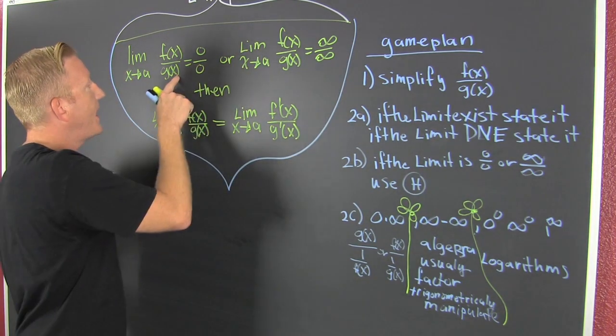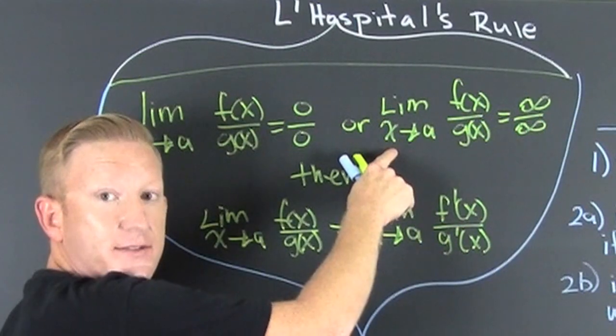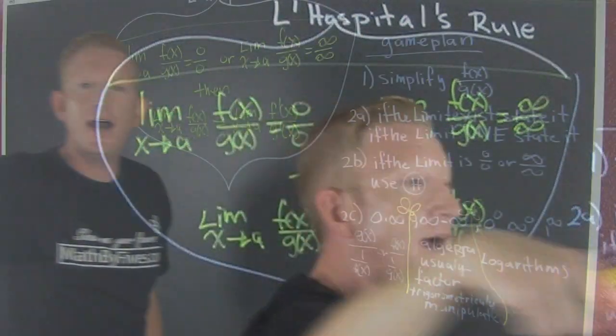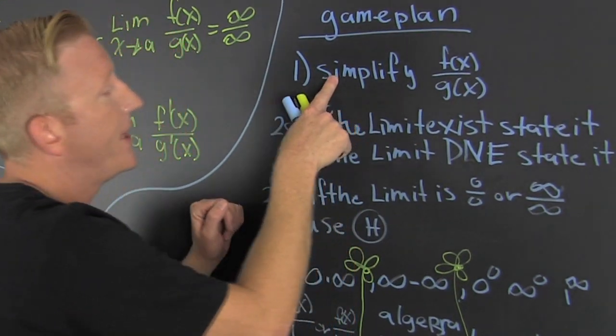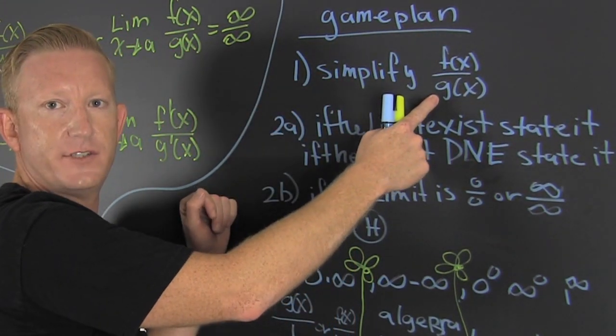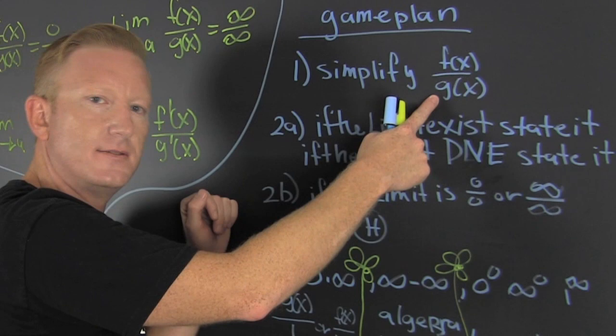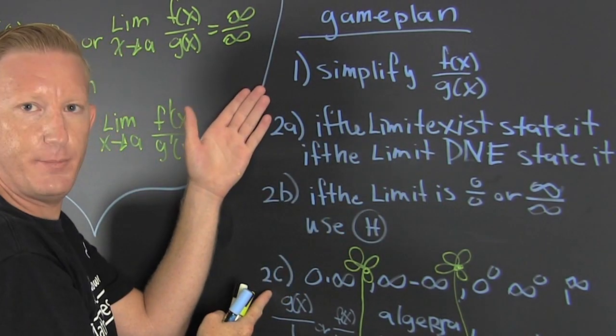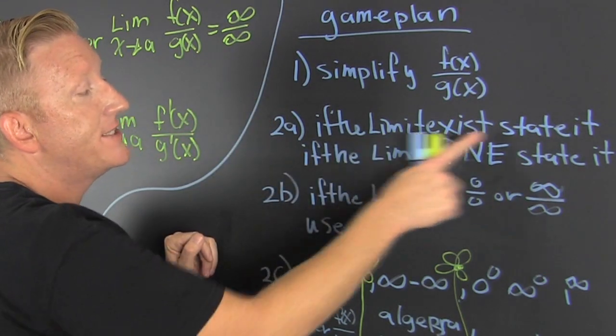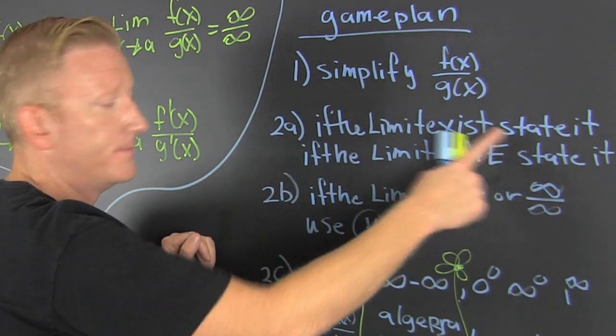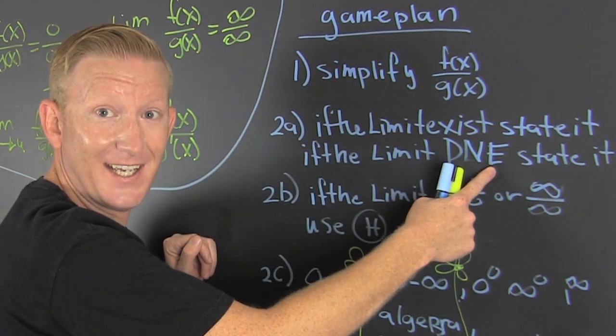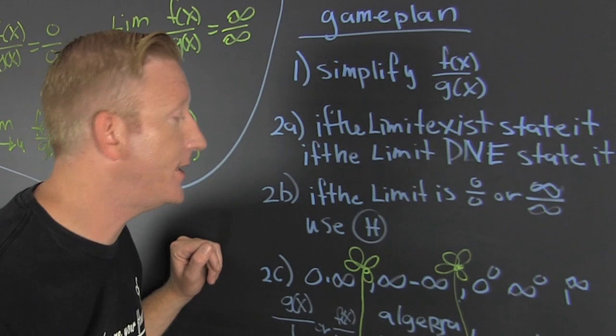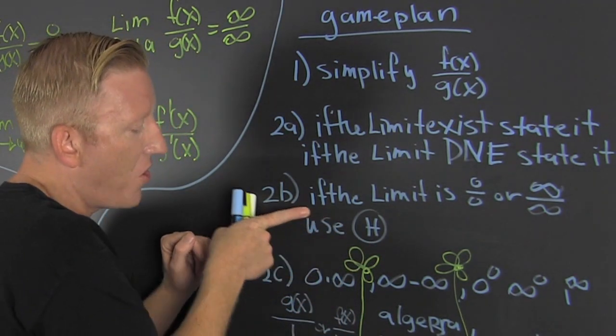So we have a game plan. The game plan: first, you're going to simplify f(x) over g(x). This makes the limit process nicer because it has easier parts. If the limit exists, state it. If the limit doesn't exist, state it. But if it's zero over zero or infinity over infinity, then you can use L'Hôpital, and you might even use it more than once.